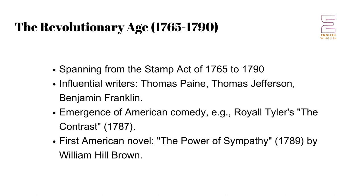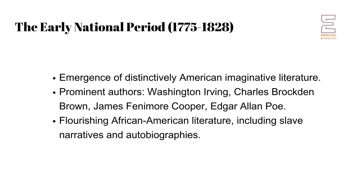The Early National Period extends from 1775 to 1828 and marks the emergence of a distinctively American imaginative literature. It includes the works of Washington Irving, Charles Brockden Brown, James Fenimore Cooper, and Edgar Allan Poe. African-American literature also began to flourish during this time, with slave narratives and autobiographies gaining prominence.